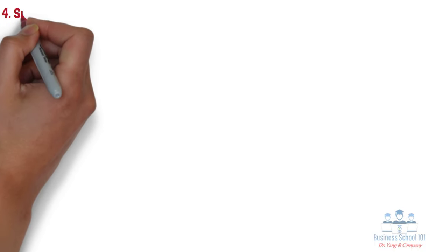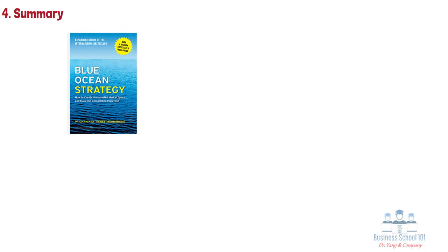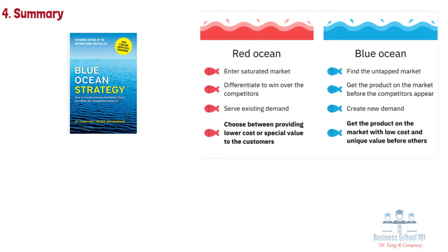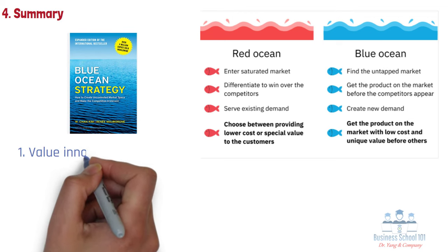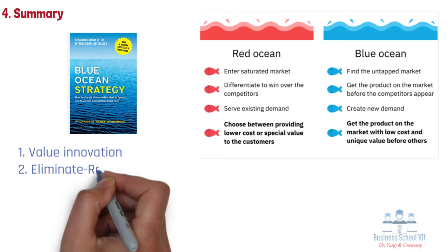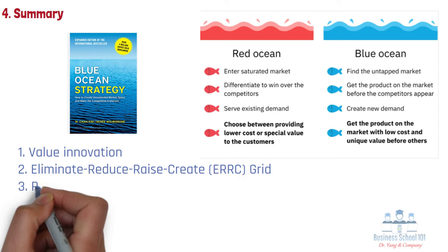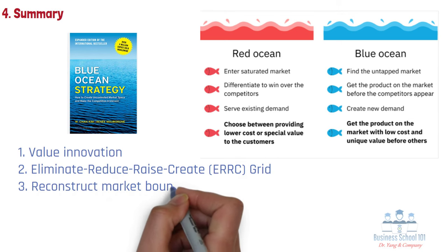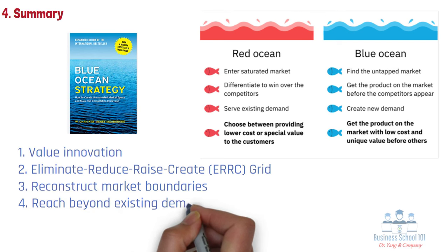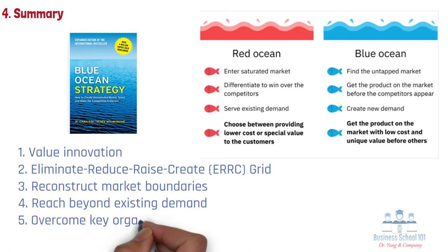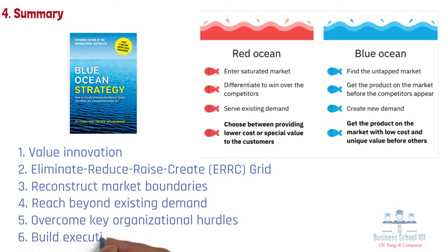Section 4: Summary. To sum up, the Blue Ocean Strategy is a business framework developed by W. Chan Kim and Renee Moborn that emphasizes creating new, uncontested market spaces — or blue oceans — rather than competing in existing markets, or red oceans. The strategy is built on six key principles: Number 1, Value Innovation; Number 2, Eliminate Reduce Raise Create Grid; Number 3, Reconstruct Market Boundaries; Number 4, Reach Beyond Existing Demand; Number 5, Overcome Key Organizational Hurdles; Number 6, Build Execution Into Strategy.